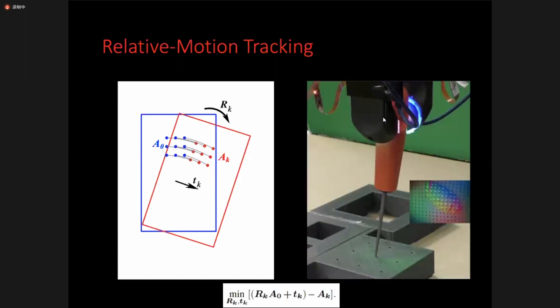On the right hand side, it's the real experimental setup. The gripper equipped with vision-based tactile sensor is grasping an object and moving. With the tactile measurement, we can track the object's motion.